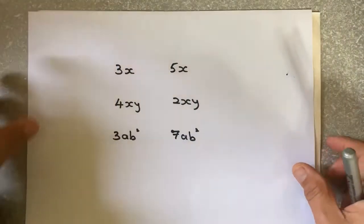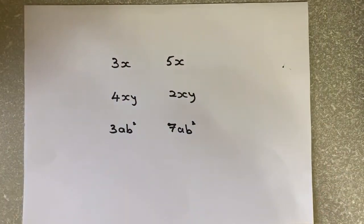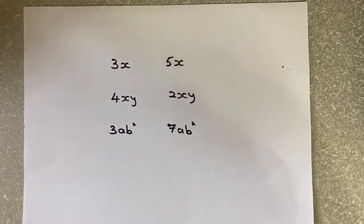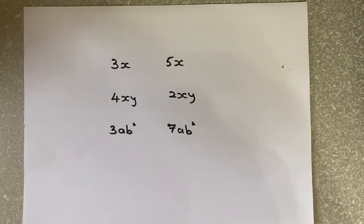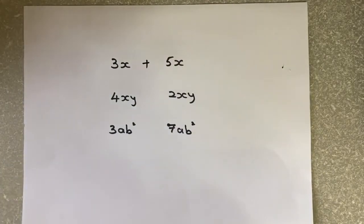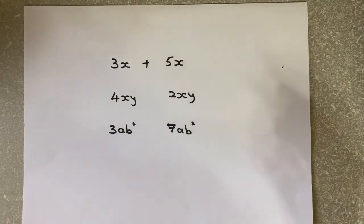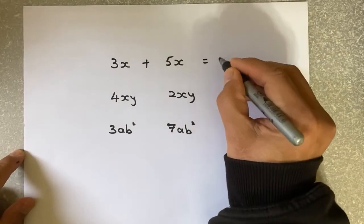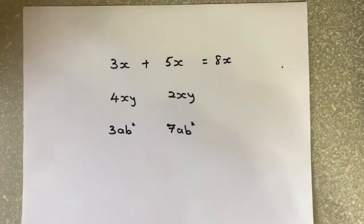We look at 3X and 5X. We look at the letters: X and X. Are they the same? They belong to the same family and we can add them up. For example, 3X plus 5X - just like 3 apples plus 5 apples - gives you 8 apples or 8X.